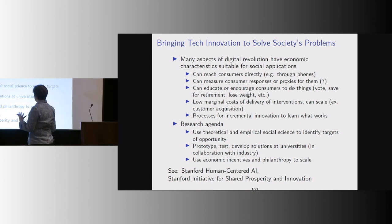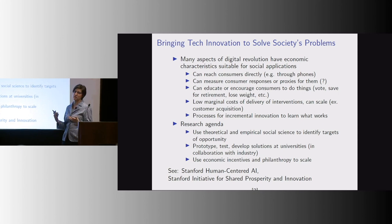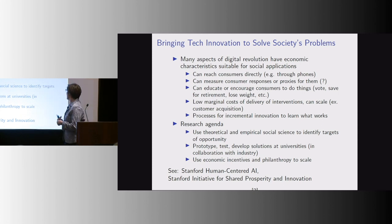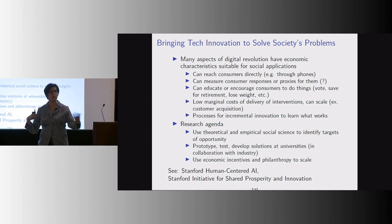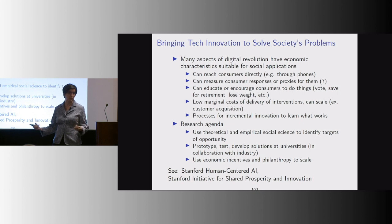The broader agenda I'm committing myself to has three parts: use theoretical and empirical social science to identify targets of opportunity — whether that's literacy, poor children, or whatever — and places where there are candidates for good interventions. Then prototype, test, and develop solutions at universities or in collaboration with social startups, ed-tech startups, or companies like Facebook and PayPal. Finally, use economic incentives and philanthropy to scale those innovations once you've developed something.